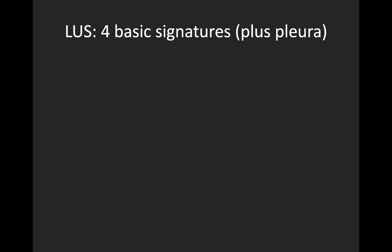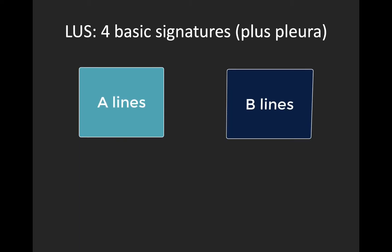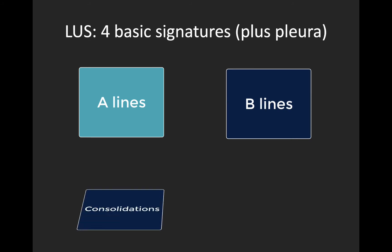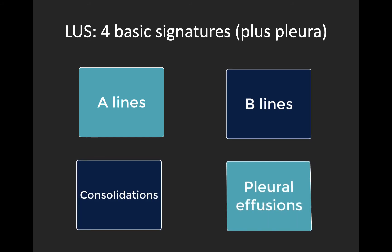Just to give us some context and familiar language for today's screencast, I'll briefly mention that there are four basic patterns that you're going to look for on lung ultrasound, in addition to the evaluation of the pleura itself. There are only four potential signatures, which is part of what makes the learning curve for this application relatively short. You're always going to see one of these four signatures: A-lines, B-lines, consolidations, pleural effusions, plus the evaluation of the pleura itself.